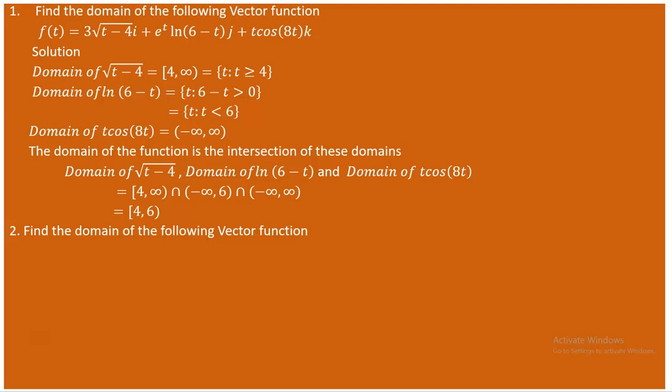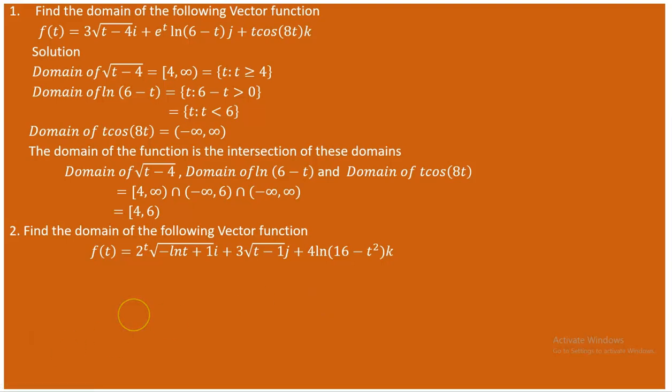Problem two: find the domain of the vector function f(t) = e^t · √(-ln(t) + 1) i + 3√(t-1) j + 4·ln(16 - t²) k. As usual, we find the domain of each of the three component functions.